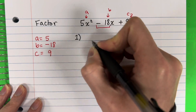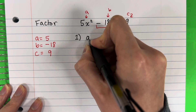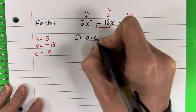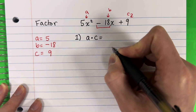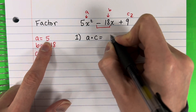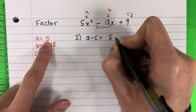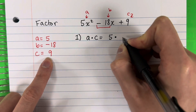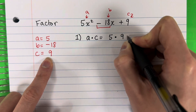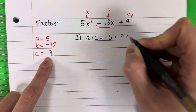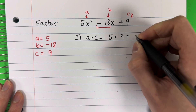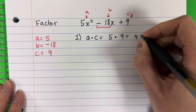So step one here, we're going to do A times C. A is 5 times C is 9. What is 5 times 9? It's 45.